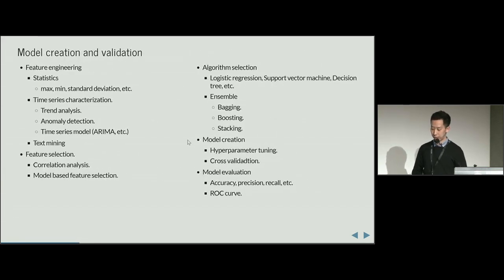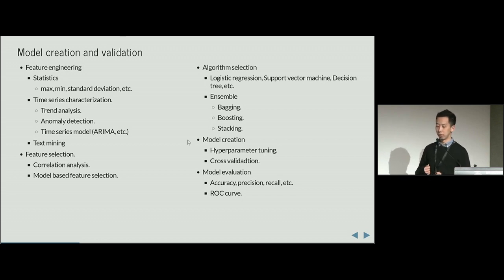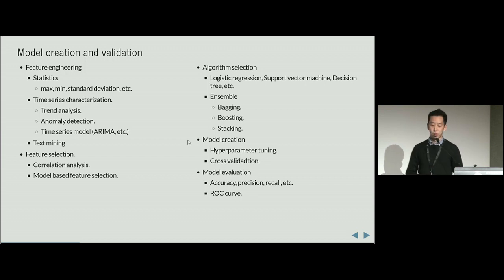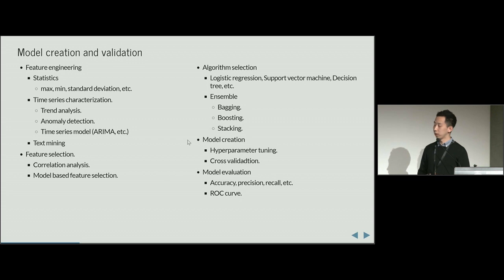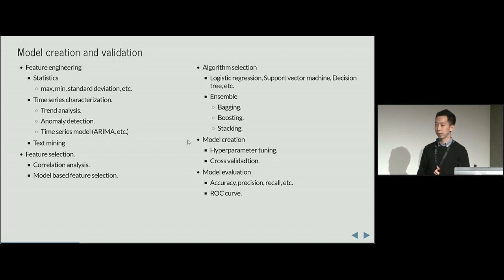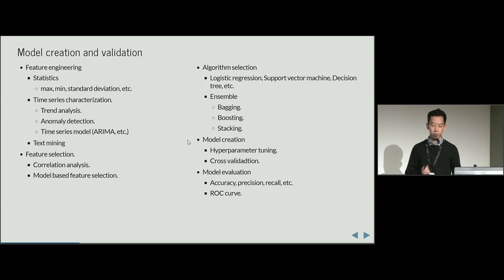These are basically the techniques we use for building the model for prediction. Normally we start with some feature engineering to collect the data and extract useful information from the raw data, and then perform some feature selection.